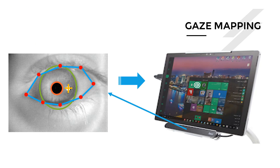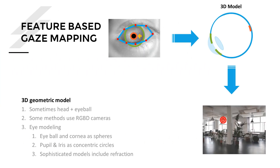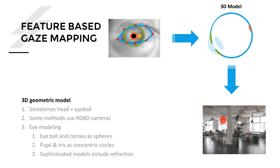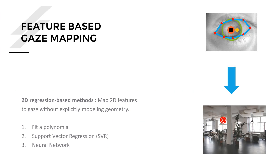There are various methods for gaze mapping. The first class is feature-based methods. Among these, the first is 3D geometric model-based methods, where a 3D model of the eye — and sometimes the head or RGBD cameras — is used. Features are extracted from the image to estimate the 3D model parameters, then gaze direction is estimated. High-end commercial systems use this approach. There is also a 2D regression-based method where features are used in a regression problem to solve for gaze direction — fitting a polynomial for X and Y coordinates, using support vector regression, or neural networks.